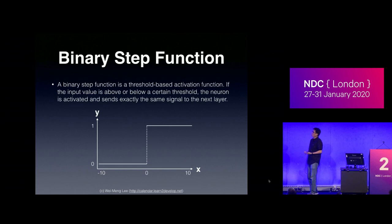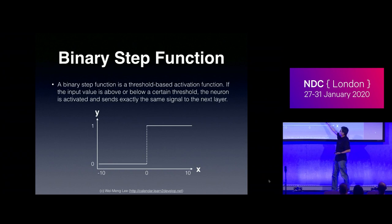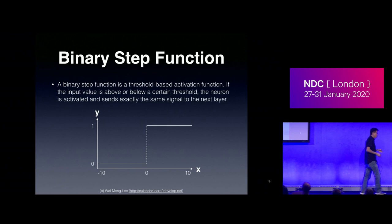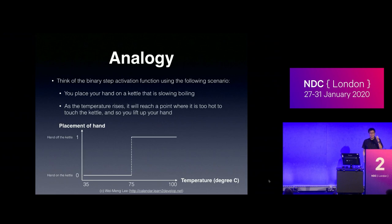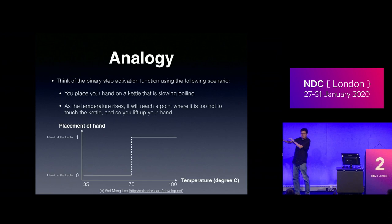The first is the binary step function. If the input to your node is more than 0, you output a 1; if it's less than 0, you output a 0 — it toggles between 0 and 1. An analogy: it's like boiling water in a kettle and putting your hand on it. As the temperature increases and hits a threshold where it's too hot, you lift your hand off. Below the threshold you keep your hand on; above it you lift it up. That's how the binary step function works.